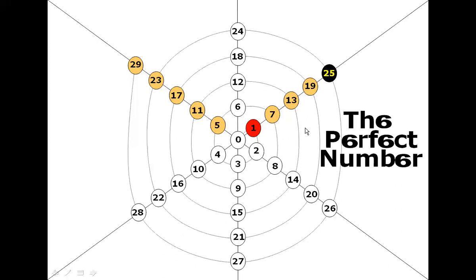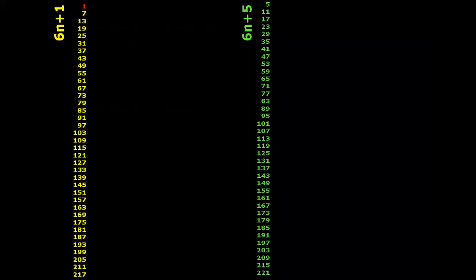The other direction that is important is 6n plus 5. We find the primes only in these two directions, but we not only find the primes there but also the prime products. The yellow line contains all the primes and prime products in the direction of 6n plus 1, while the green array contains all the numbers in the direction of 6n plus 5 — all the primes and prime products there as well.